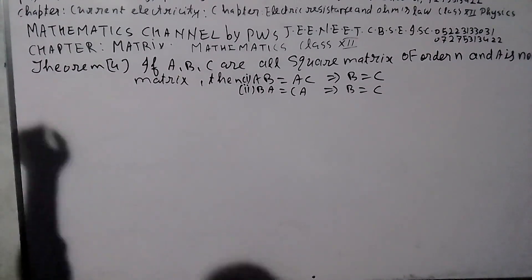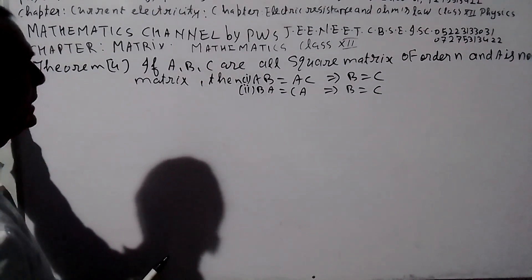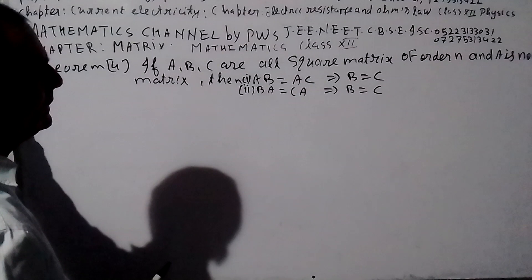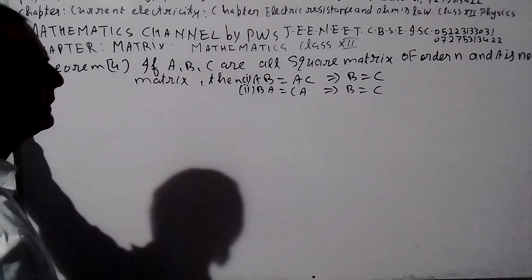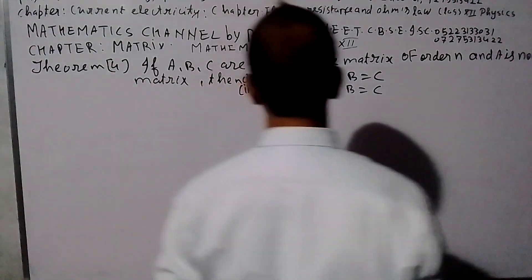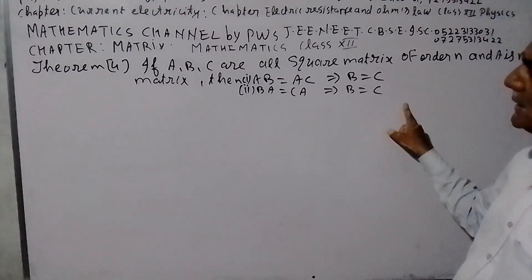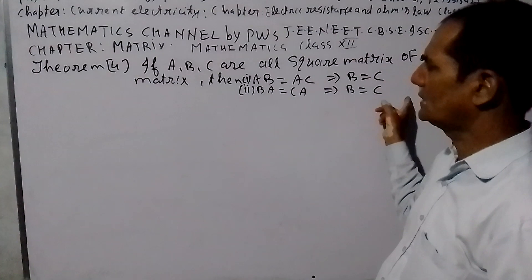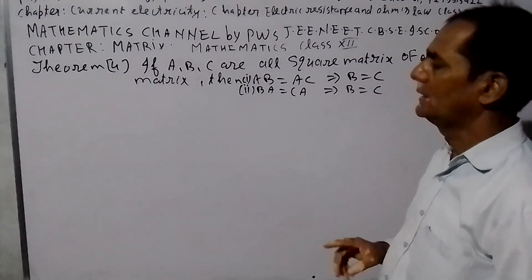If A, B, C are matrices of order n and A is a non-singular matrix, then prove that AB = AC implies B = C. This is the first part: AB = AC implies B = C.